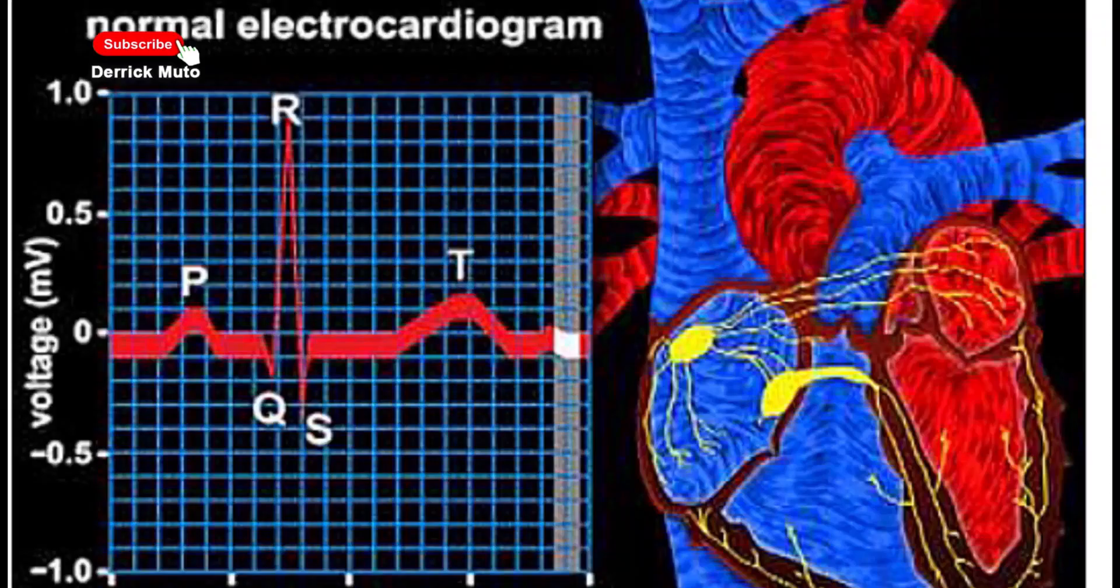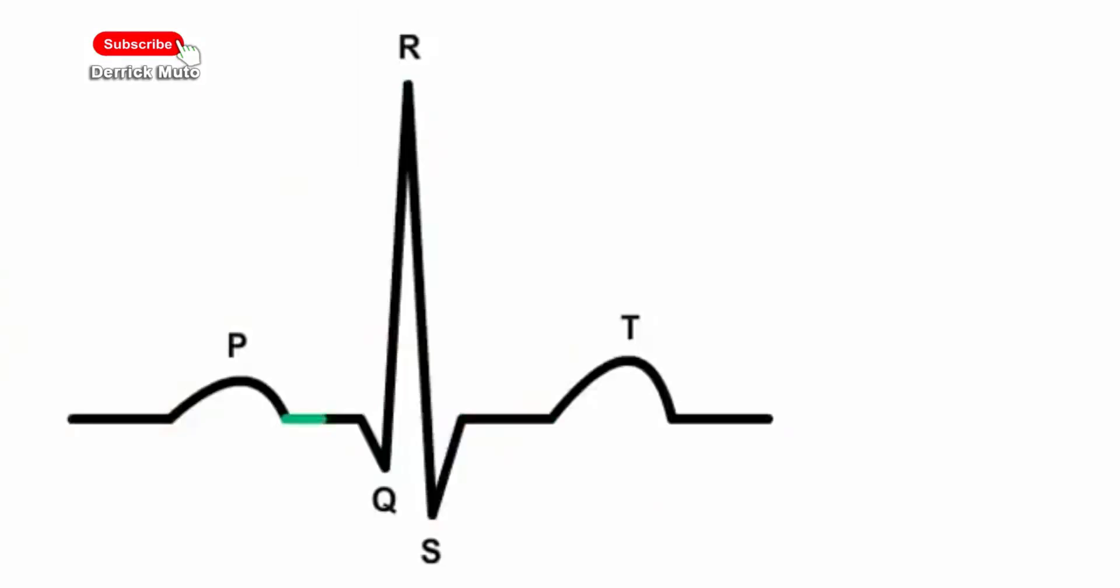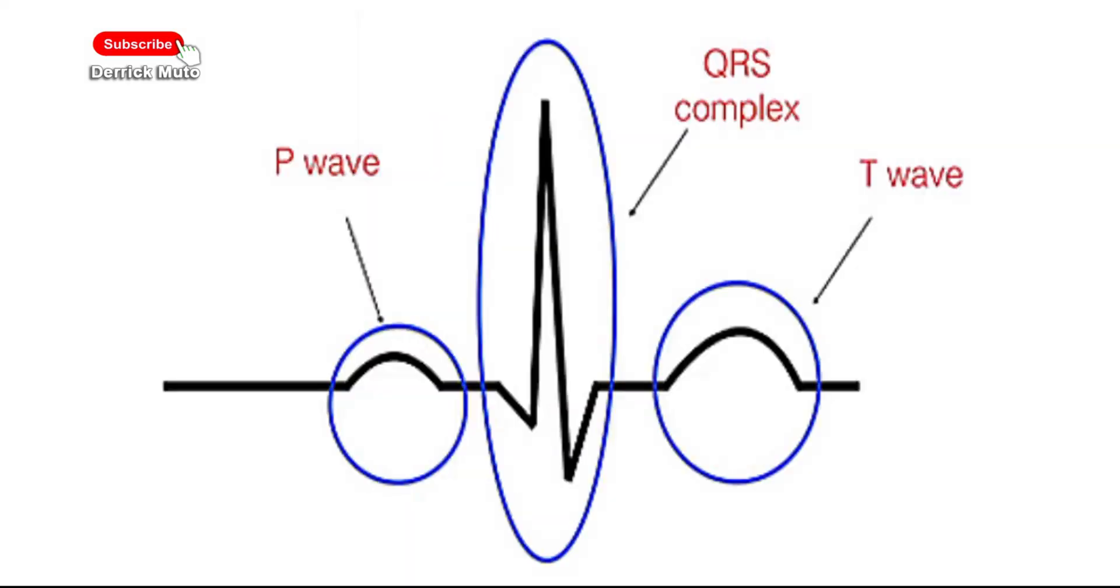These are the major parts of an ECG: the P wave, the QRS complex, and the T wave. The P wave is the first wave in an ECG and is a positive wave. It represents the depolarization or contraction of the atria as a result of the initiation by the sinoatrial node. It normally lasts for about 80 milliseconds and is followed by the QRS complex.